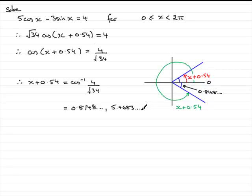All you need to do now is just take away the 0.54 from each of these answers. And that will leave you with the possible values for x in this range, 0 to 2 pi. Take 0.54 away from 0.8148 and you should find you get 0.2748 and so on. And then take 0.54 away from this value and you get 4.9283 and so on.